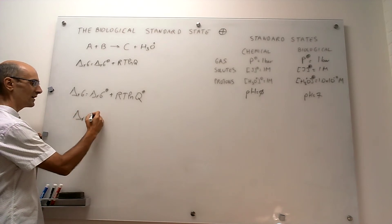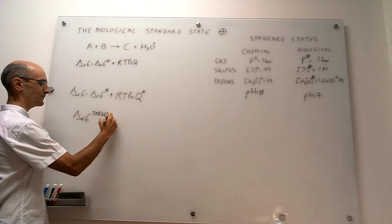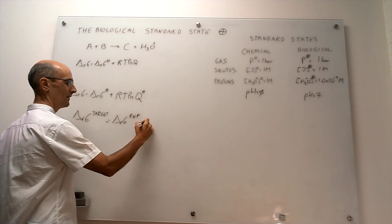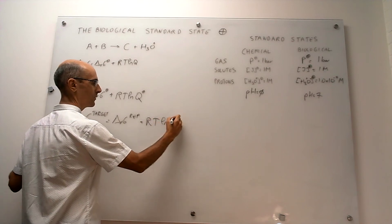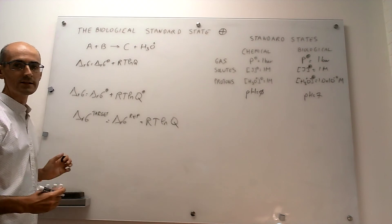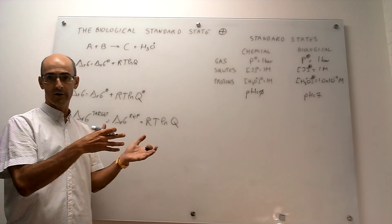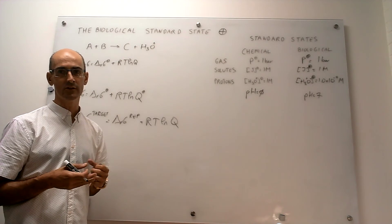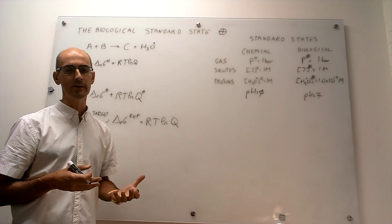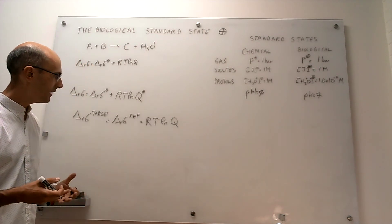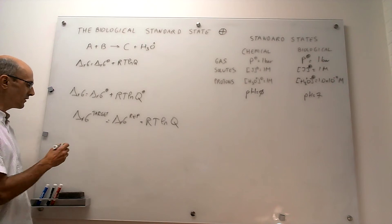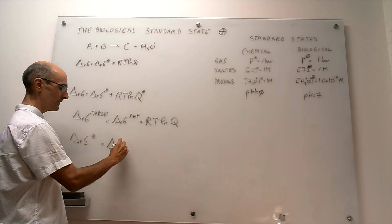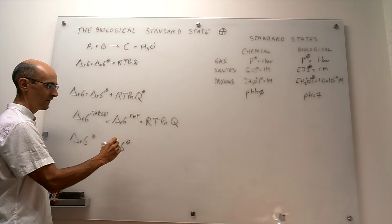Delta R G of your target equals the reaction Gibbs energy of your reference, plus RT times the natural log of Q, where the reaction quotient Q is simply the ratio of products over reagents. In the numerator you have your target concentrations, and in the denominator you have your reference concentrations. Suppose we are interested in obtaining the biological standard state reaction Gibbs energy from the reaction Gibbs energy of the chemical standard state. The question is: what is this reaction quotient?